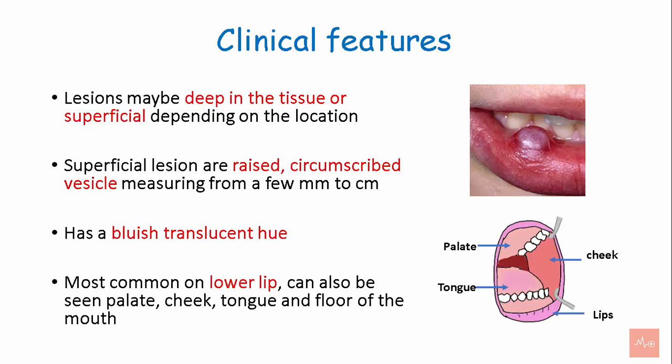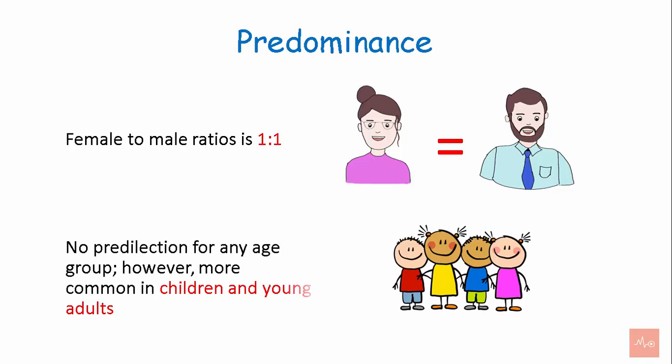The most common location is the lower lip, but mucoceles can also be seen on the palate, cheek, tongue, and floor of the mouth. The female-to-male ratio is 1:1, and there is no predilection for any age group; however, it is most common in children and young adults.